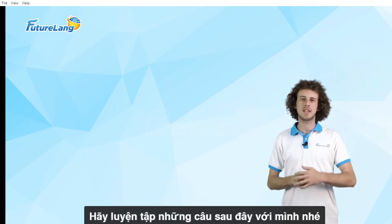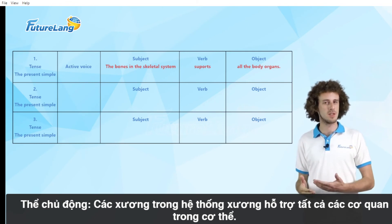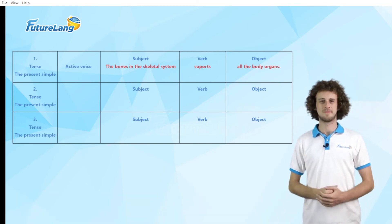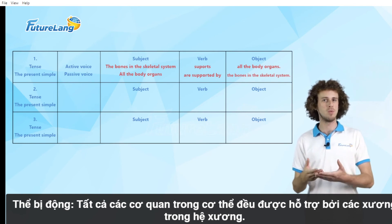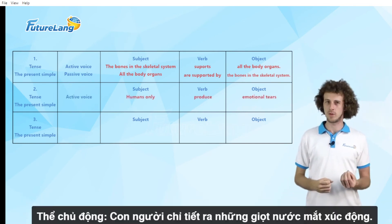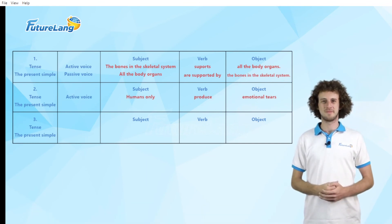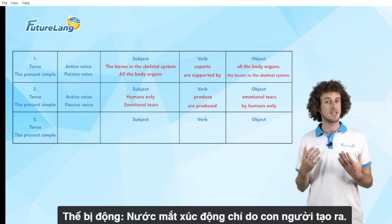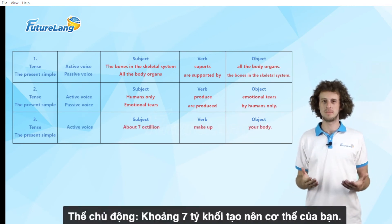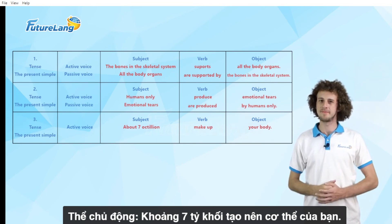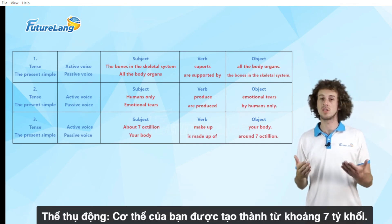Now let's practice with some more sentences. Active voice: the bones in the skeletal system support all the body organs. Passive voice: all the body organs are supported by the bones in the skeletal system. Active voice: humans only produce emotional tears. Passive voice: emotional tears are produced by humans only. Active voice: about seven octillion make up your body. Passive voice: your body is made up of about seven octillion.